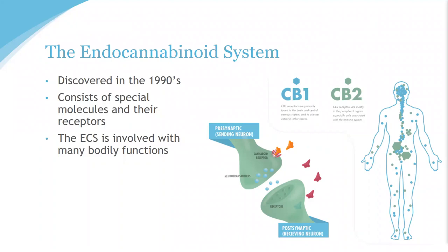Evidence suggests that the endocannabinoid system helps regulate homeostasis — the body's pursuit of equilibrium — so that these systems function optimally. The ECS plays an important role in memory, mood, inflammation, sleep health, stress metrics, anxiety, digestion, pain modulation, and appetite. Researchers are now looking closely at the relationship between the ECS and overall health. It's also fascinating to note that just like our fingerprints, everyone's endocannabinoid system is different and unique — not just in the number of receptors, but also where they're located.